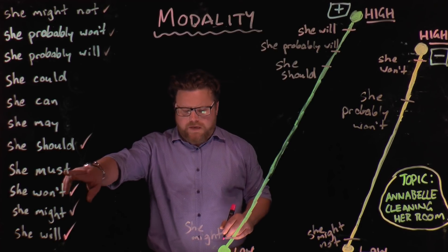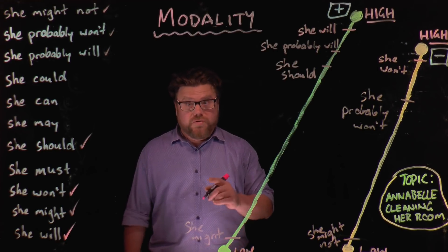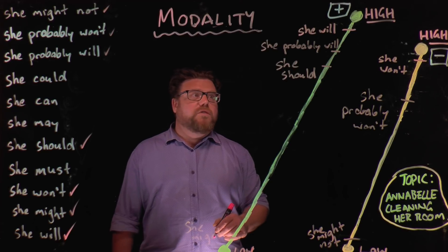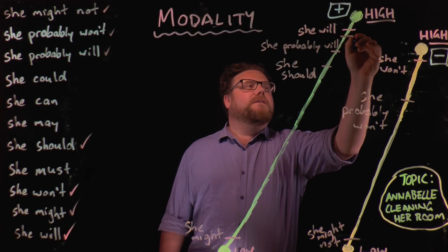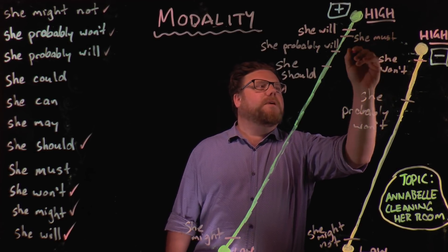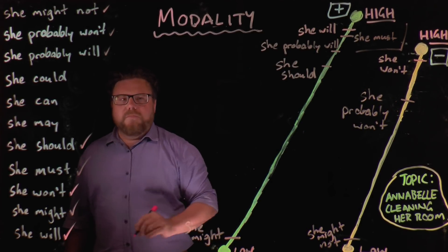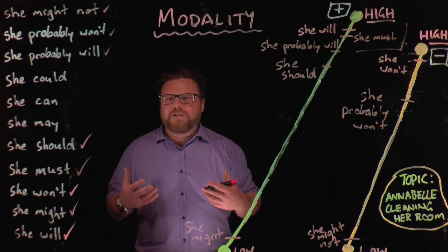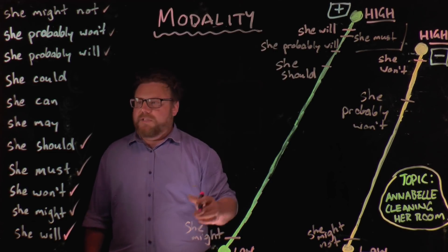We've got 'she must' left. 'She must' shows a stronger obligation than 'she should,' and it's probably the strongest apart from 'she will.' So even though we're getting crowded at the top, we put 'she must' right near the top. It's a strong modal verb showing a high degree of obligation — stronger than 'she should,' so higher up the scale.